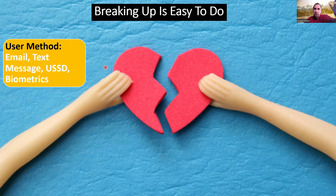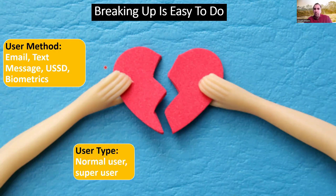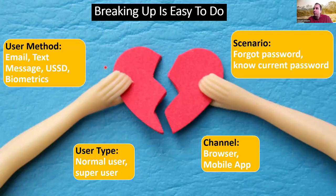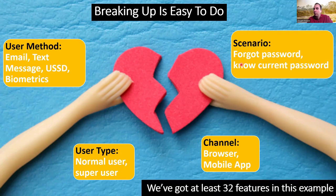Some potential ways to break down password reset: by method — email, SMS, USSD, biometrics; by user type — normal user versus super user (e.g., someone approving multi-billion dollar cross-border payments needs extra verification); by channel — browser or mobile app; and by scenario — forgotten password versus still knowing current password. That gives you four by two by two by two — 32 features. Features are living things; you start big and break them down smaller.